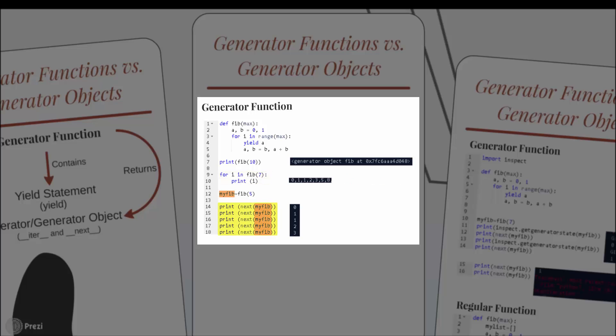You can also call the built-in function next() on your generator object, and it returns only one Fibonacci number at a time. Each next() call makes the generator function run until it reaches the next yield statement. So when I call the built-in function next() for the very first time, Python executes the generator function and returns the value passed to the yield statement, then suspends the execution of the generator function. The next call to next() again executes the generator function, but right after the yield statement where the generator function was suspended, until the next yield statement, and so on.